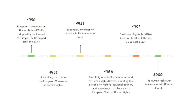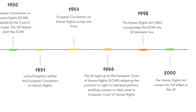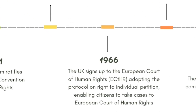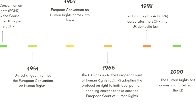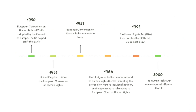The United Kingdom didn't allow complaints against it to the European Court of Human Rights until 1966 — that was because of the Empire. And we did not make it part of UK law until the year 2000.